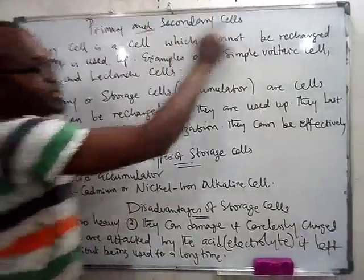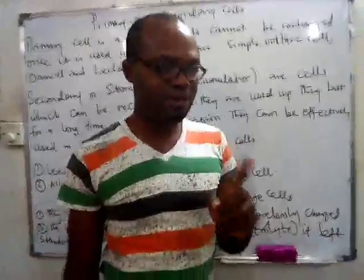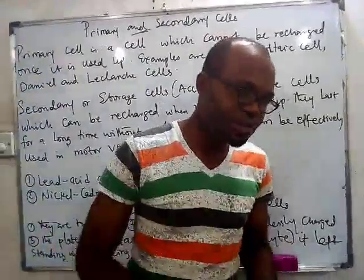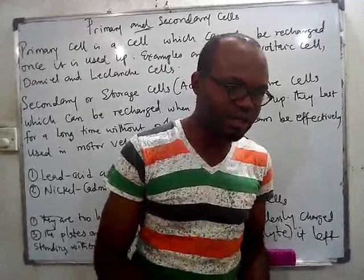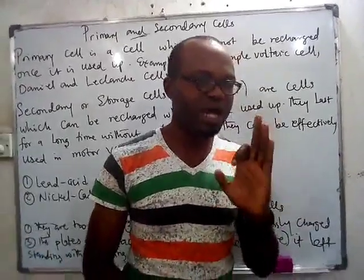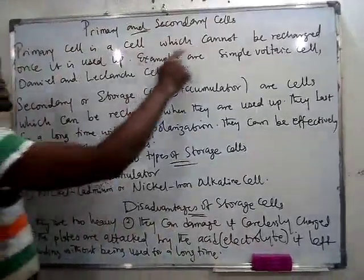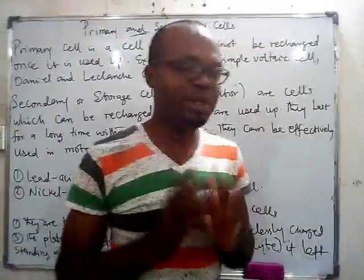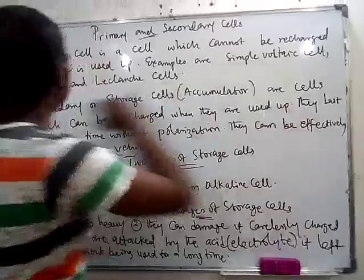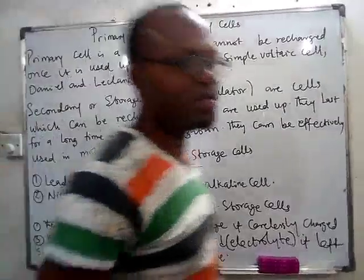We are going to be looking at primary and secondary cells. In the last class we learned about primary cells. Why are they primary cells? Because they are cells that cannot be recharged — once they are used up, you cannot recharge them. Examples are the simple cell, the Daniel cell, and the Leclanché cells. Those are the examples of primary cells.